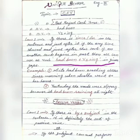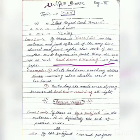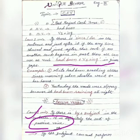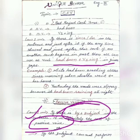Now we will see the rules of passive voice in correct form of the verb. Rule number one: if there is 'by' plus subject in the sentence, it is definitely a sentence of passive voice.